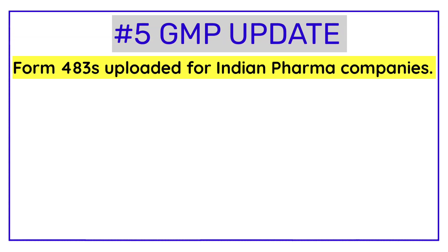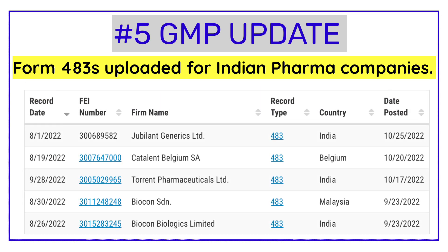GMP Update Number Five: visiting the USFDA website to check Form 483s issued for Indian pharma companies in October 2022. Two Indian pharma companies had Form 483s uploaded: Torrent Pharma and Jubilant Generics. Torrent Pharma's Indrad, Gujarat facility was issued a Form 483 with three observations, whereas Jubilant Generics' Dehradun facility was issued a Form 483 with six observations. Links to Torrent Pharma's observations are in the description, and a video on Jubilant Pharma's 483 observations will be uploaded soon.